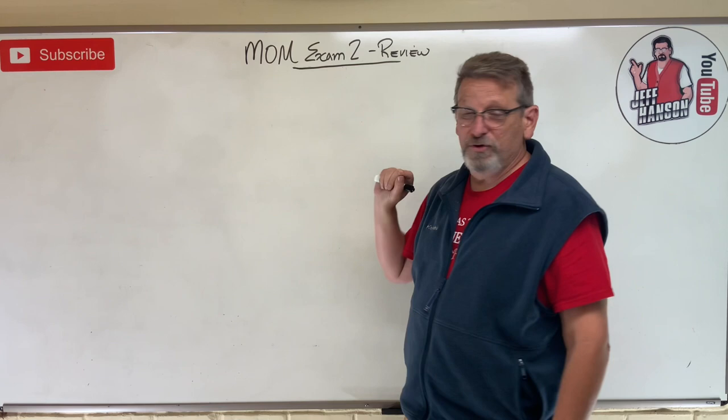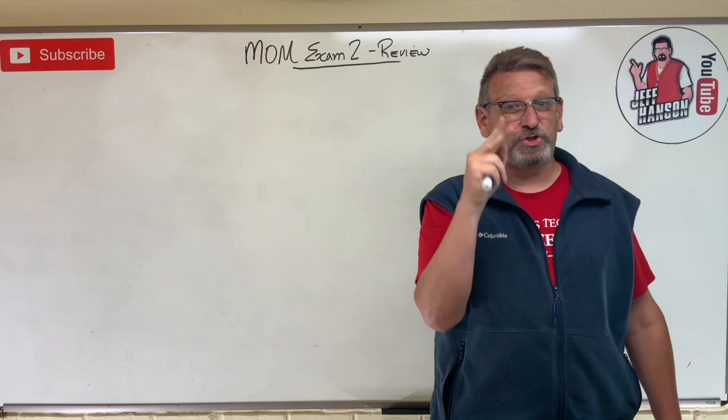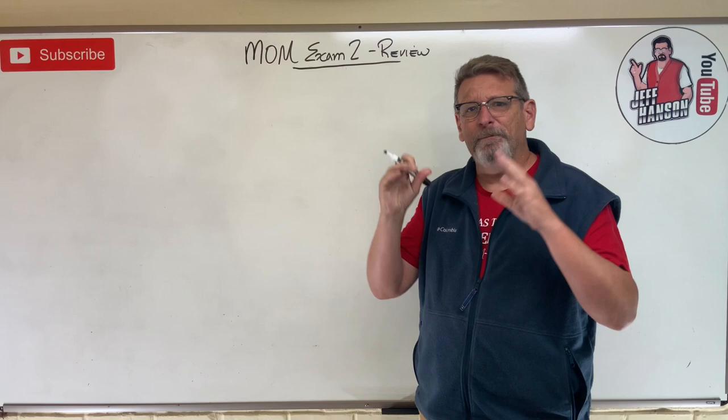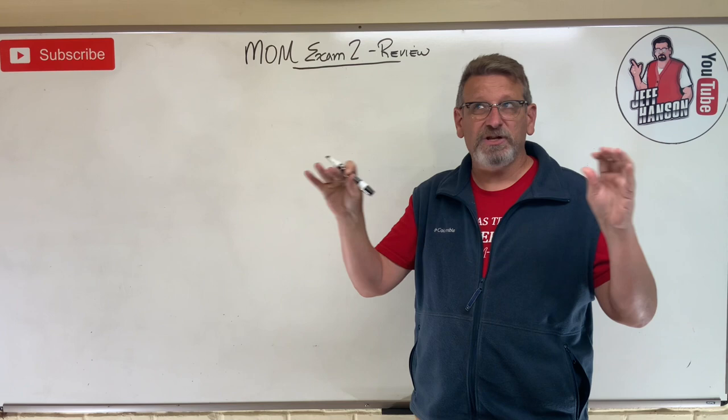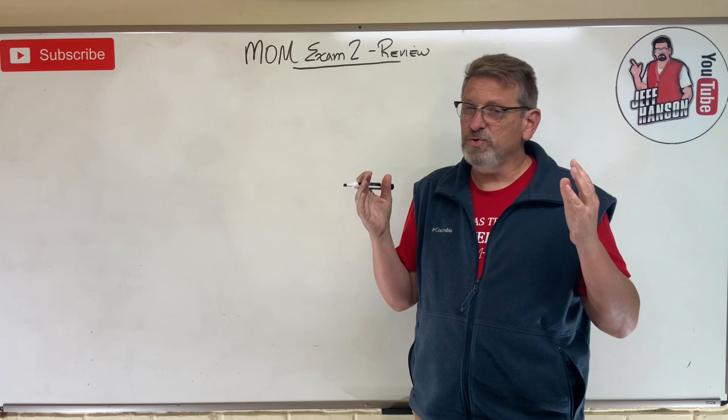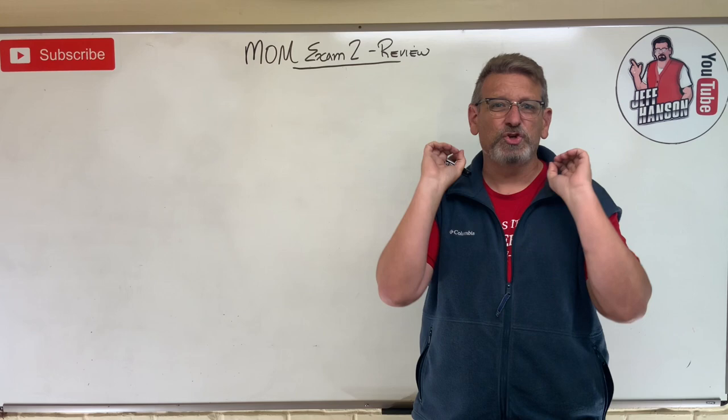What I'm going to do today is give you kind of a review about what is most likely to show up on your exam number two. So the last exam stopped with PL over AE, right? Axial elongation plus thermal elongation. So this is the last thing we had covered on the last test. So we're starting this test with chapter five, which is on torsion.